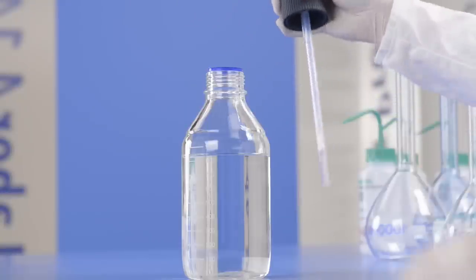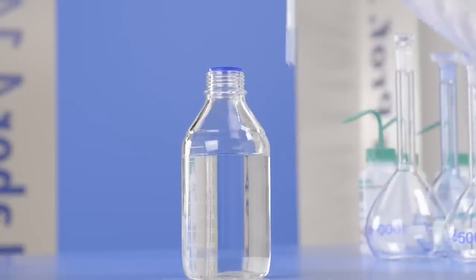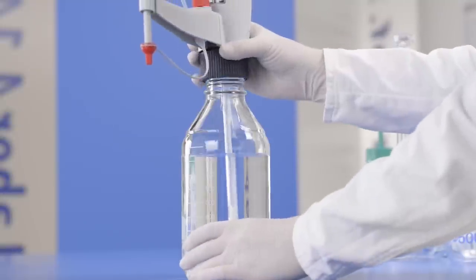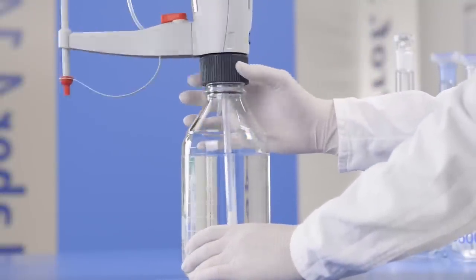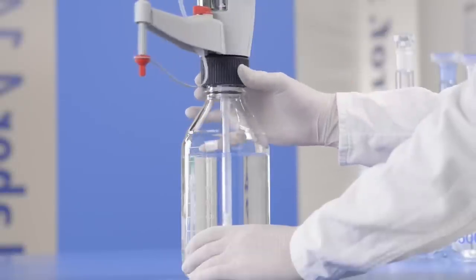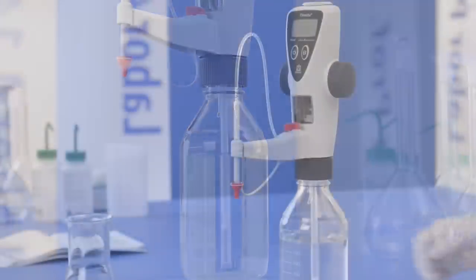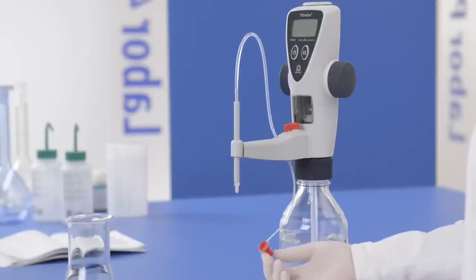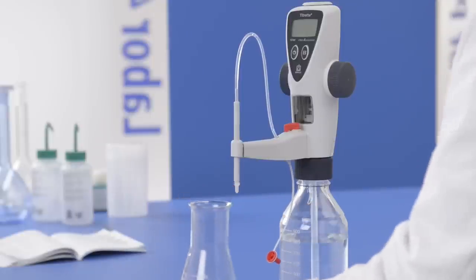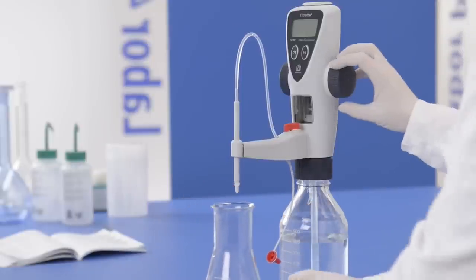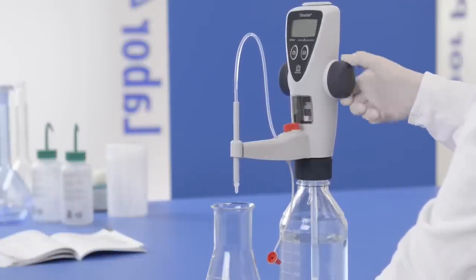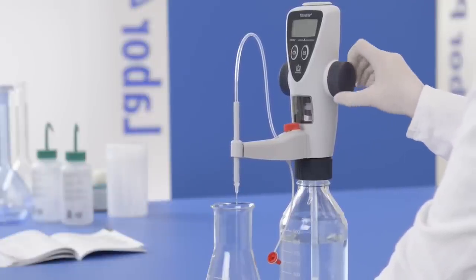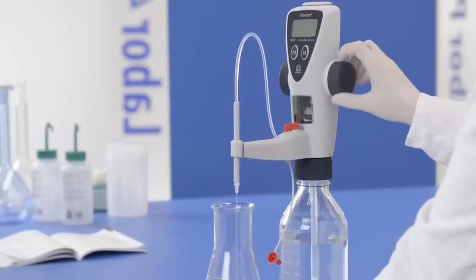After mounting the titrate onto the titrant bottle, adjust the titrating tube. The titrating tube may still contain residual test liquid. To remove it, fill the dispensing cylinder once and empty it with the red valve set to titrate.